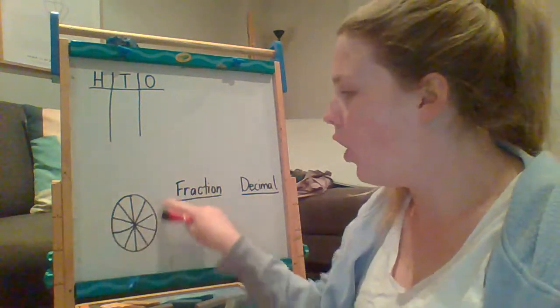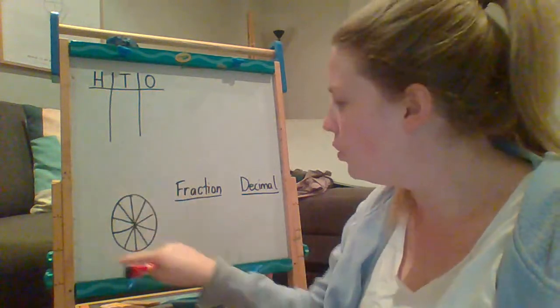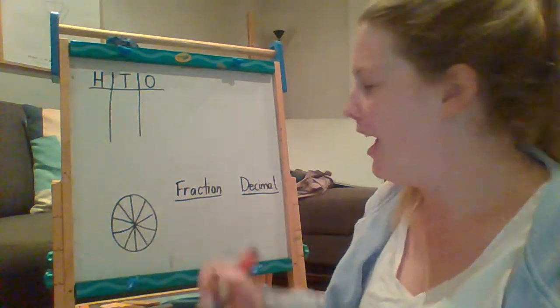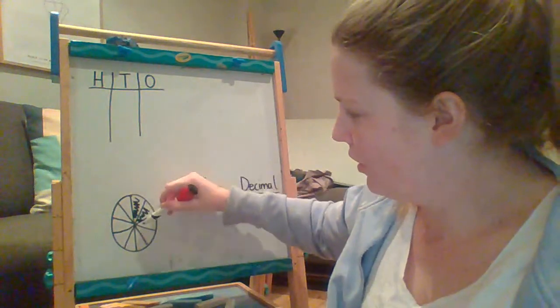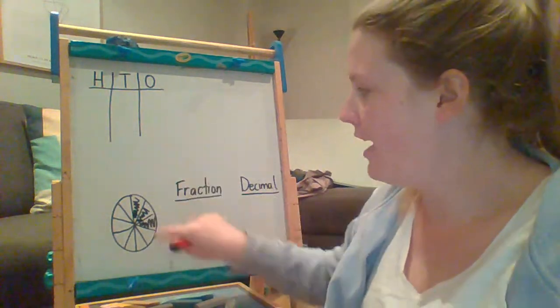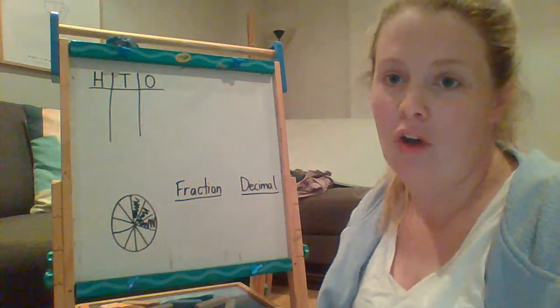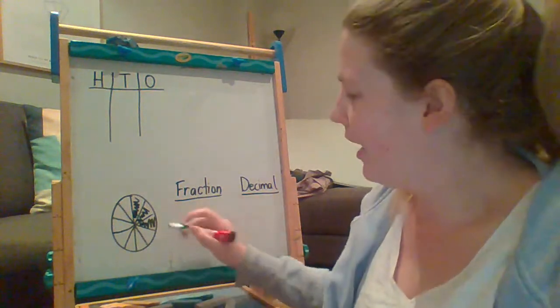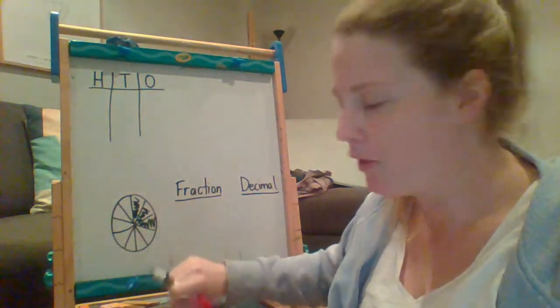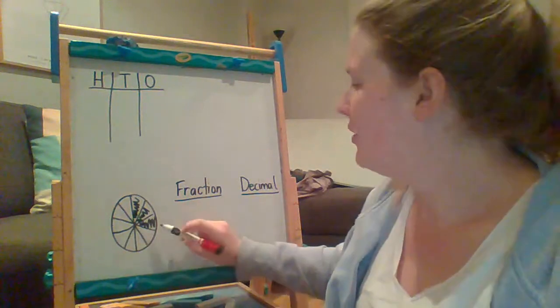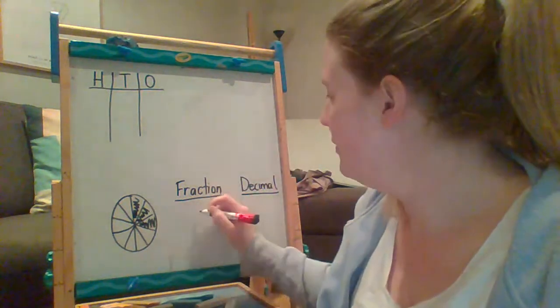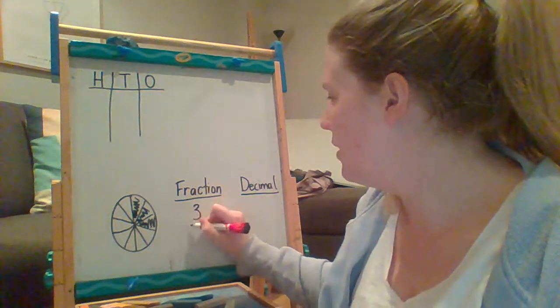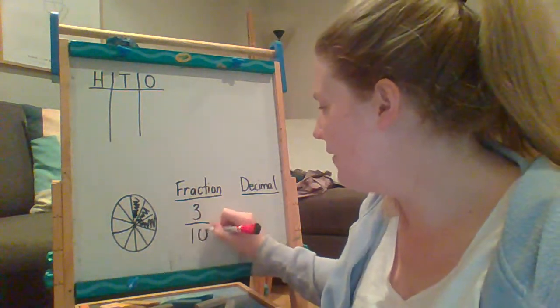So if I had a whole pie or a whole pizza here and I ate one, two, three, I ate three pieces of a whole number, or a whole pie or a whole pizza. So if I was to write that as a fraction showing that part of a number, part of a whole number, that would be three tenths.